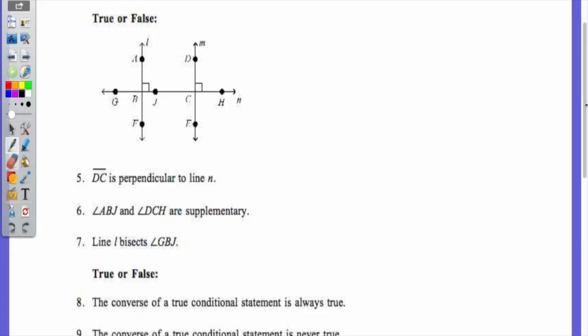DC is perpendicular to line N. Is that true or false? True. How do we know that? Because there's a right angle symbol. And a right angle means 90 degrees. ABJ and DCH. Are they supplementary? Yes. They're both 90 degrees. And 90 plus 90 is 180. And supplementary angles measure 180 degrees.